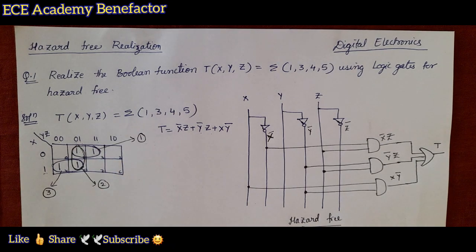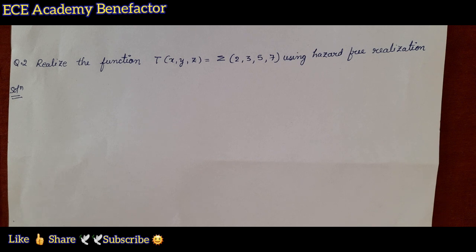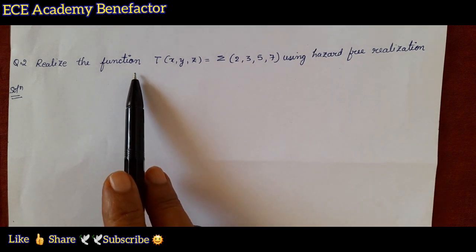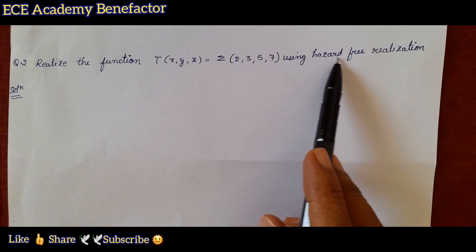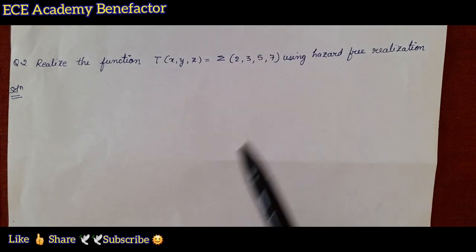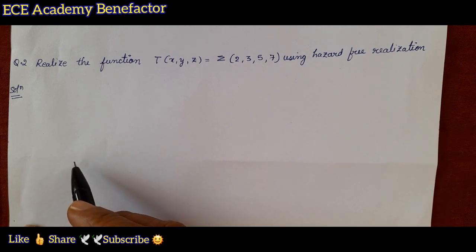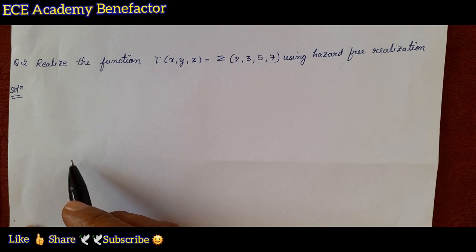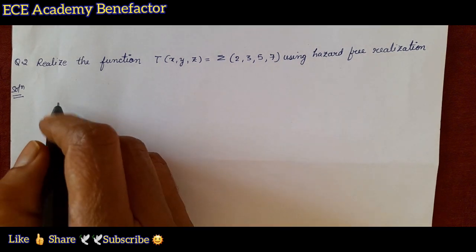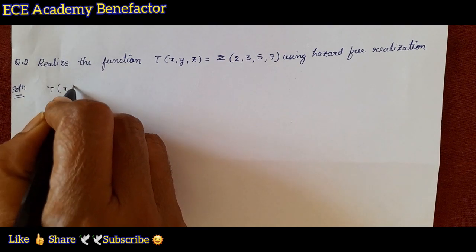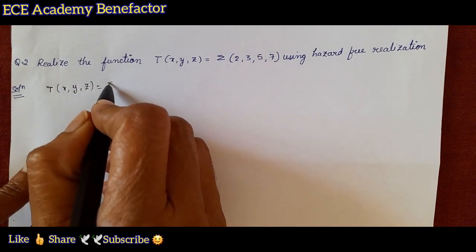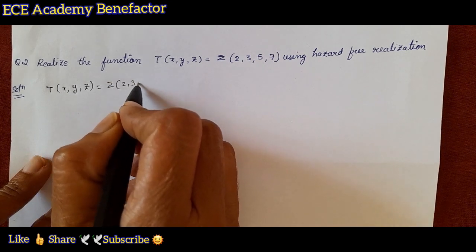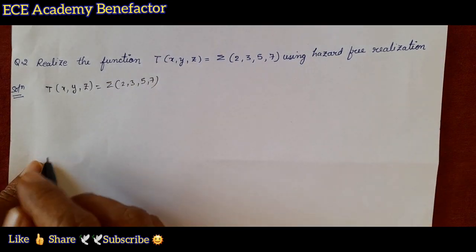Let us see the next problem. The second problem is: realize the function f(x,y,z) = Σ(2, 3, 5, 7) using hazard-free realization. The same process applies — first we simplify using the three-variable K-map. The function is f(x,y,z) = Σ(2, 3, 5, 7).